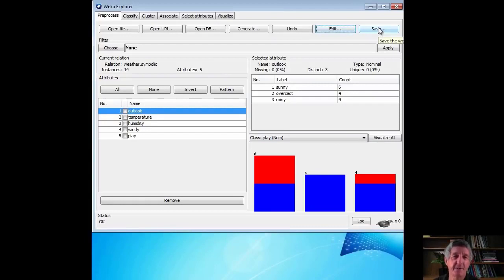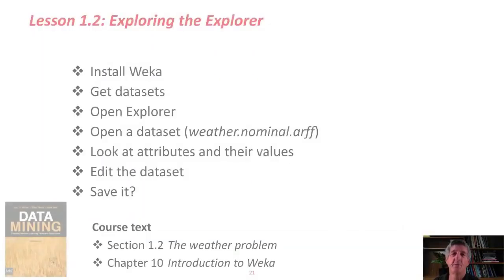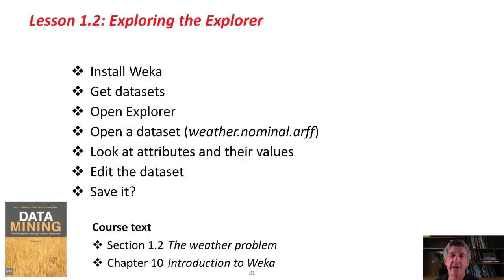The dataset on disk is still the same as it was. I'm not going to save it, and I don't think you should save it, because we're going to be using this dataset quite a bit in this course. Here's what we've done in this lesson: we've installed Weka, we've got the datasets, we've opened the Explorer, we've looked at the weather.nominal.arff dataset, we've looked at the attributes and their values, we've edited the dataset, and we didn't save it.